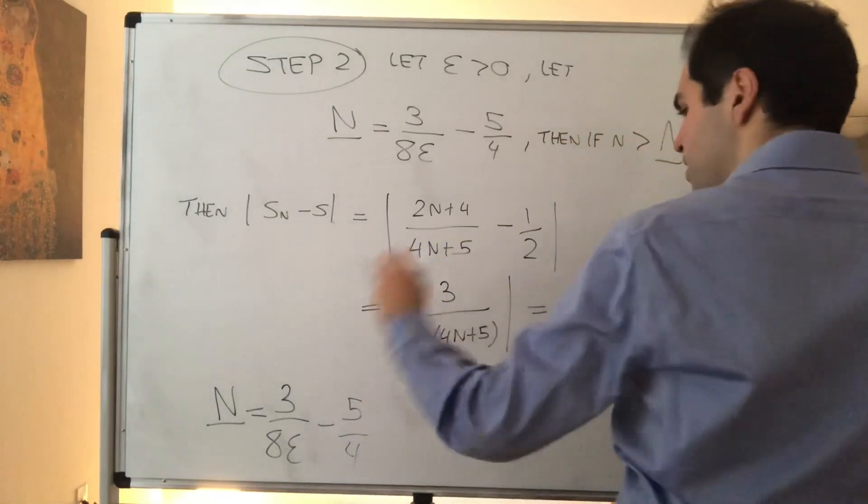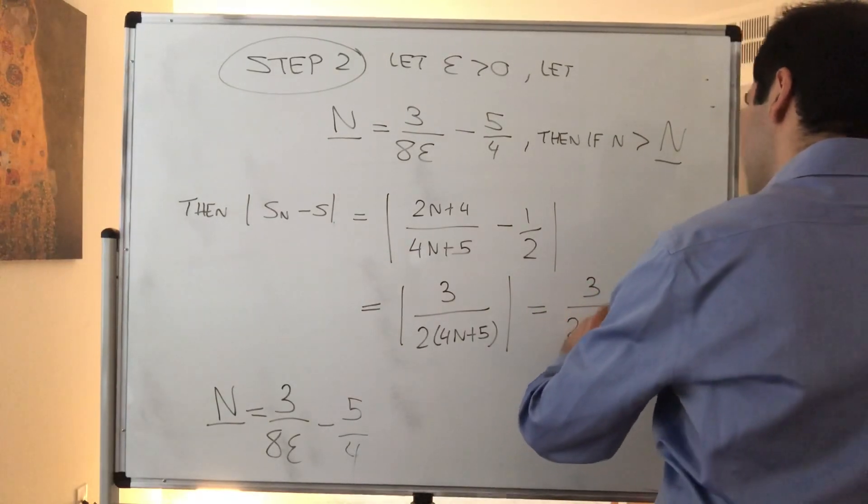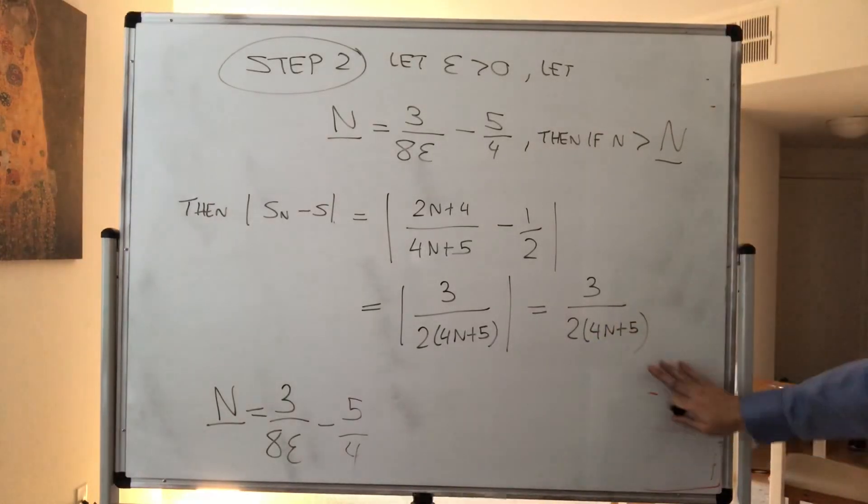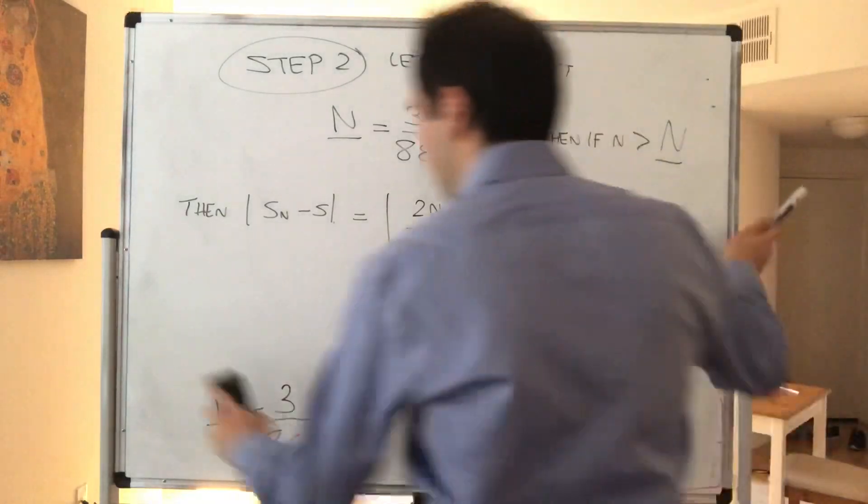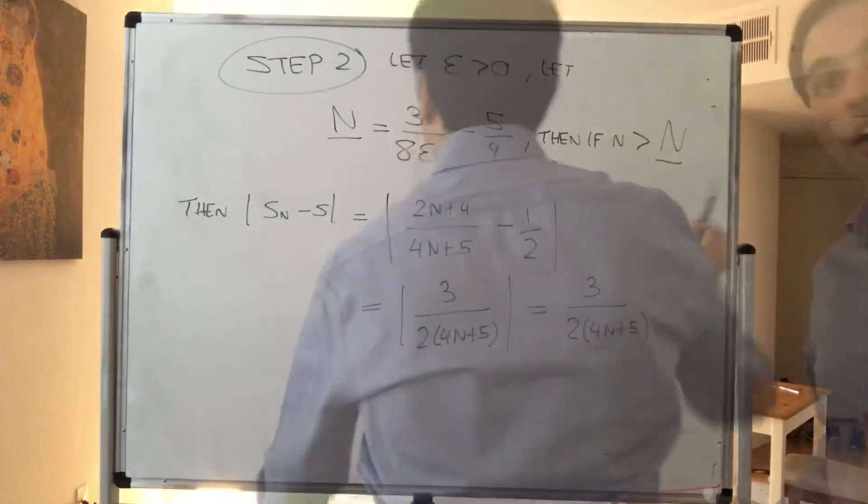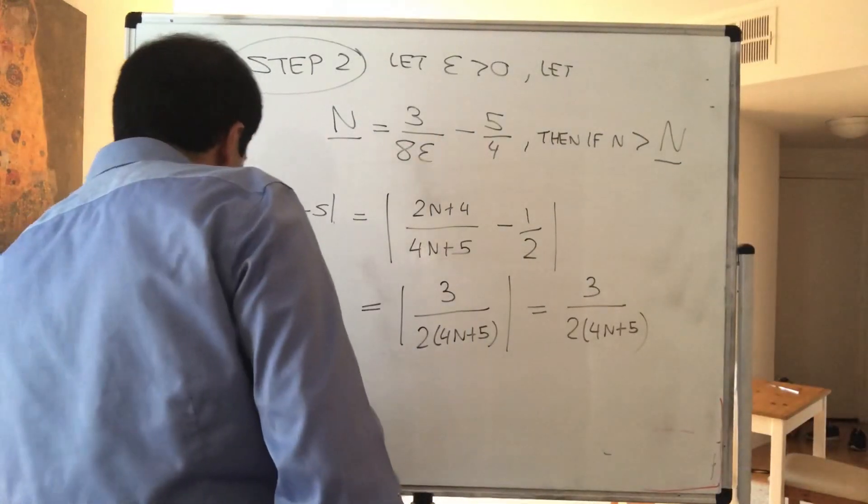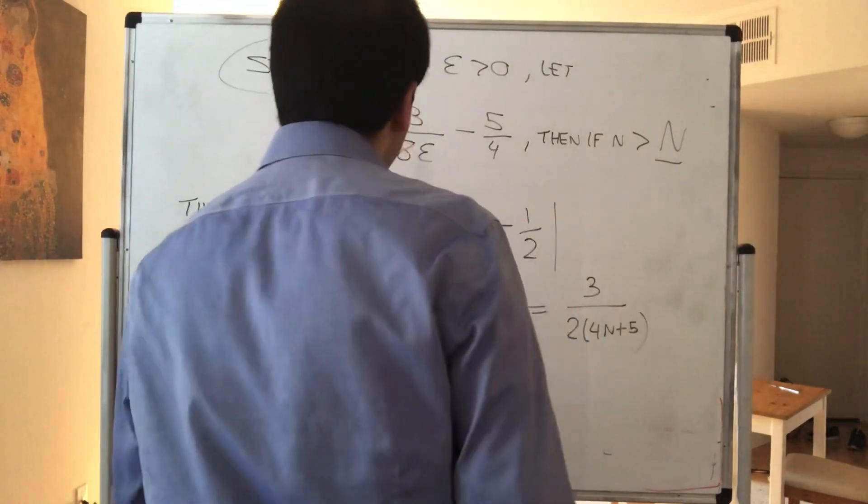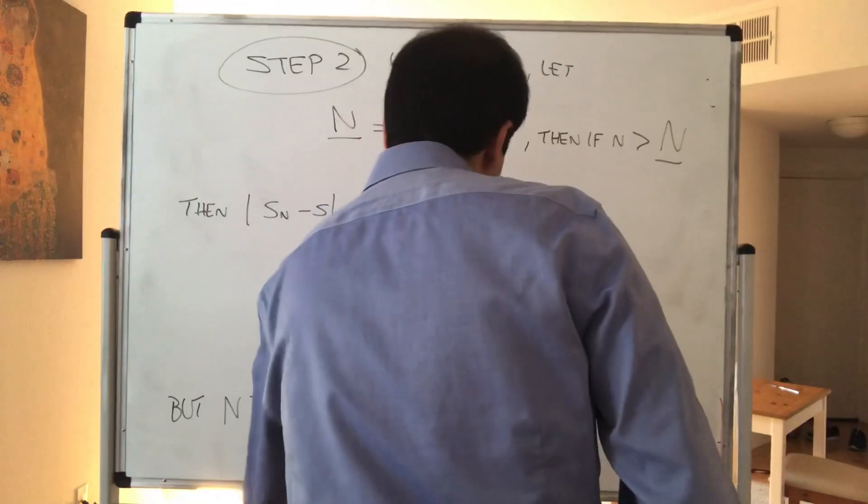And again, this is, because it's positive, that is 3 over 2 times 4N plus 5. The point is what we have to worry about are inequalities. So here now, unfortunately, you have to repeat your work, but now remember. We know that N, it's greater than capital N, which becomes 3 over 8 epsilon minus 5 fourths.